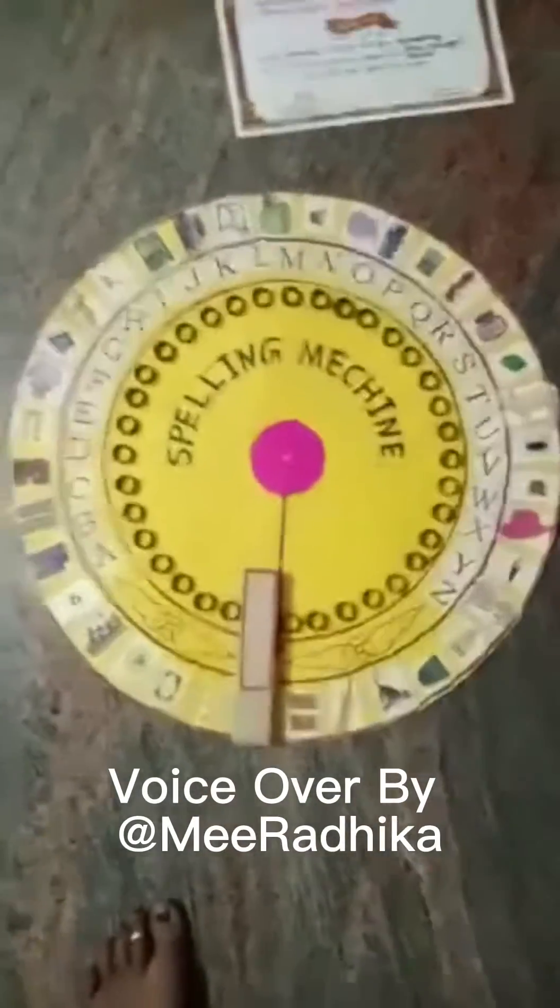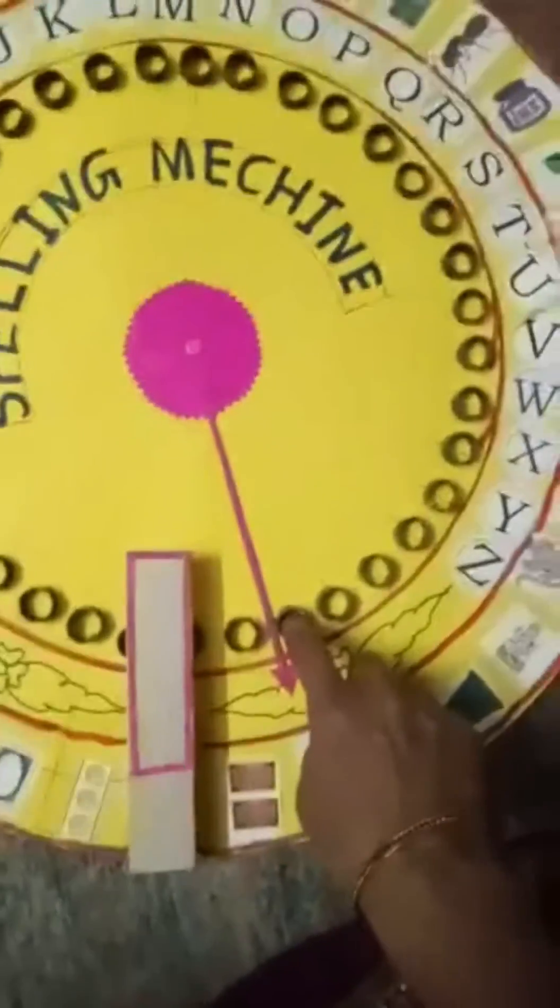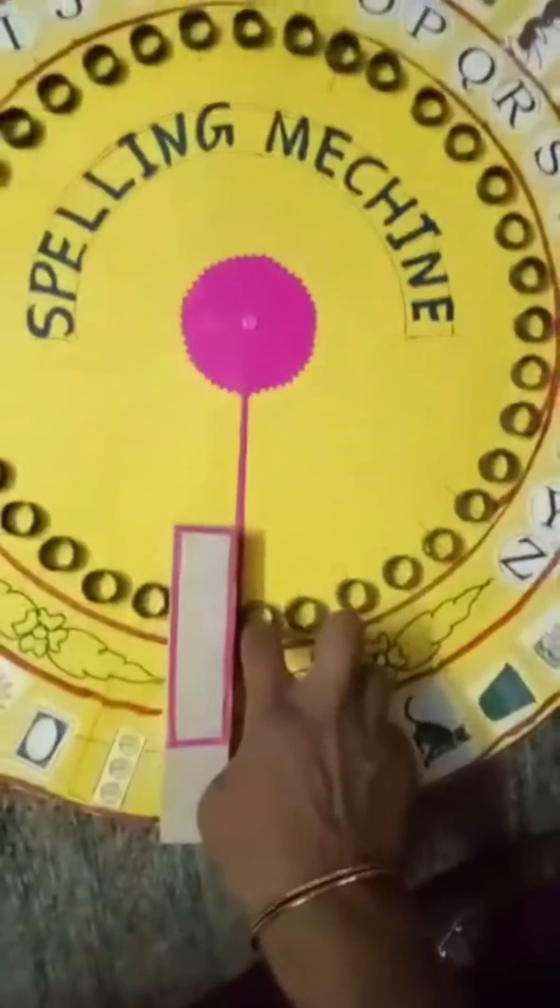Namaskaram. This is a spelling machine. In this, we can see the arrow. This arrow has to be set here to this line.